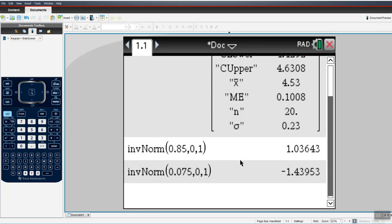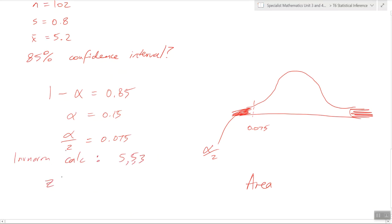So, we have to use inverse normal to find the z value. So, you're left with z equals 1.44.